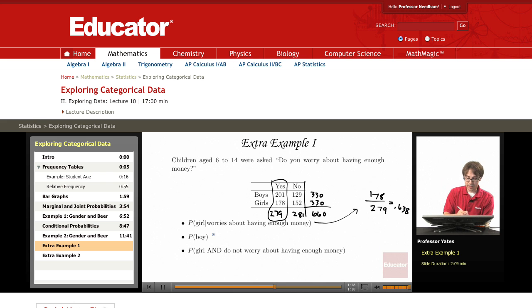What's the probability that they're a boy? Well, how many boys do we have total? This is a marginal probability, so we're looking at that marginal total. There are 330 boys divided by 660 total, and we get .5 for that probability. So this is our marginal probability.